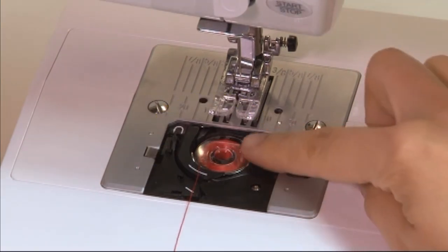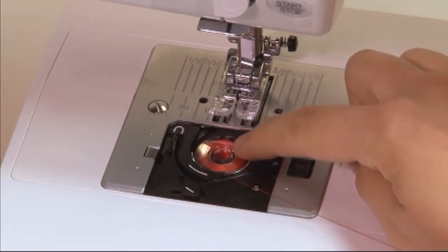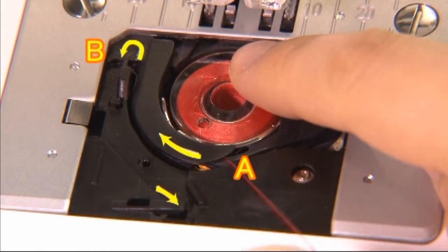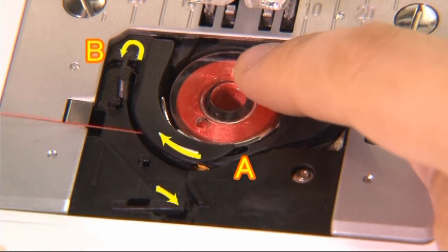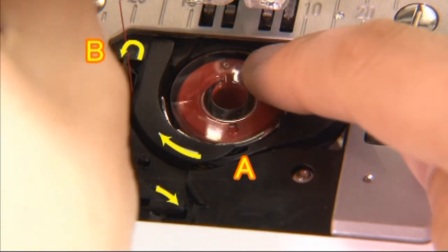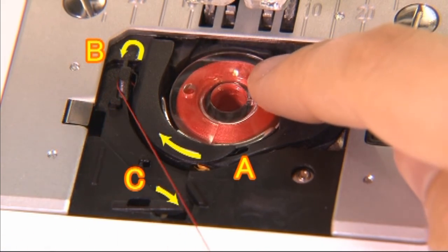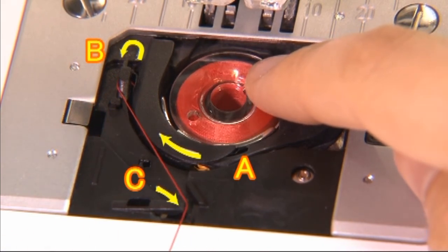With a finger held gently on top of the bobbin, pull the thread at the arrow markings into the stitch plate thread guide from A to B. Pull the thread at the arrow markings into the stitch plate thread guide from B to C.